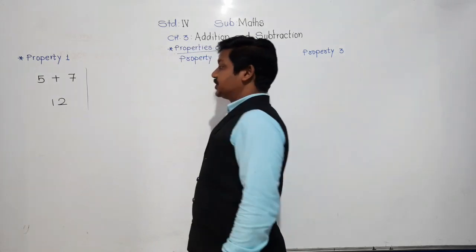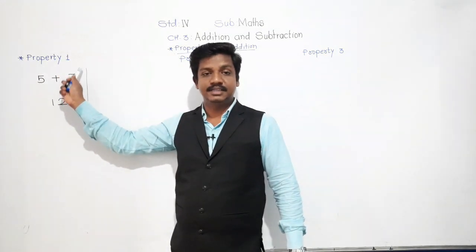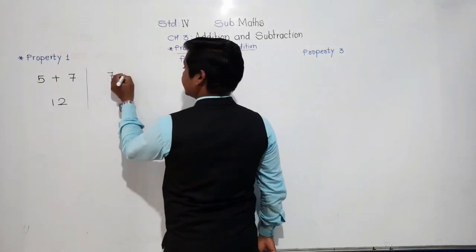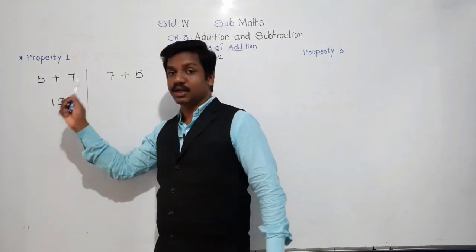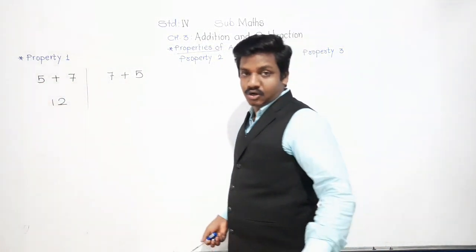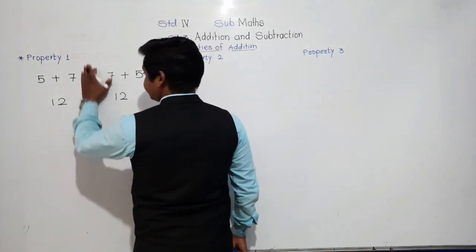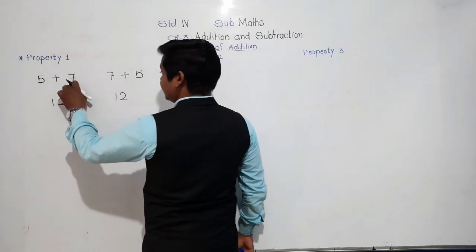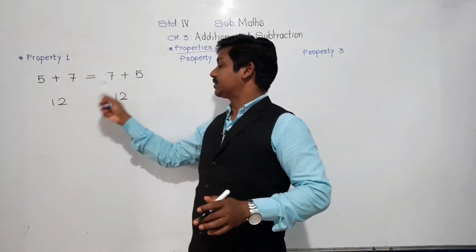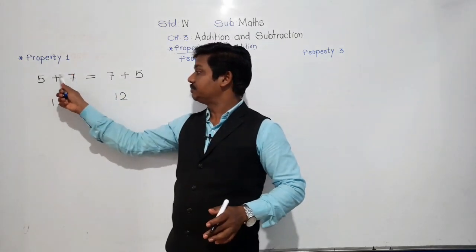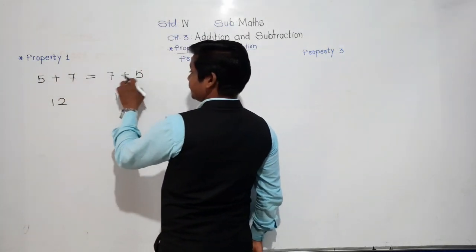Now suppose we change the order of 5 and 7. Earlier, 5 was at the first position and 7 was added. Now if we write 7 first and add 5 to it: 7 plus 5 is also 12. That means 5 plus 7 is equal to 7 plus 5.